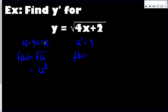The derivative of 4x plus 2 is just 4, and that works every time you have a linear function — the derivative comes from the x term's coefficient. Now the derivative of the square root is a little more complicated. We use the power rule: the one half comes down in front as the coefficient, so it's one half times u to the power of one half minus one, which is negative one half.